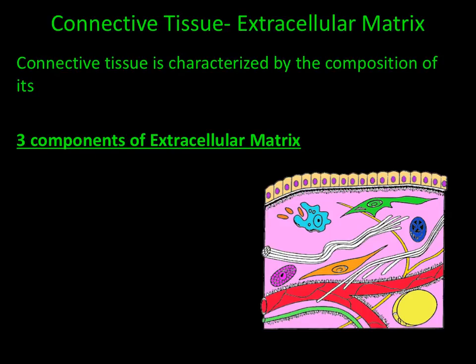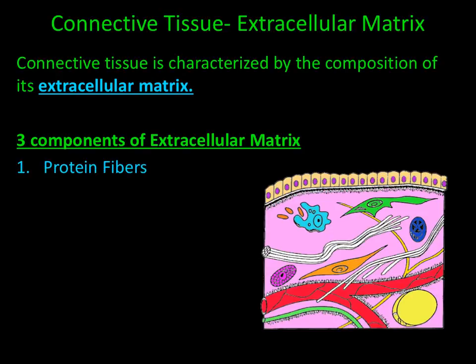The second part of connective tissue is called the extracellular matrix, and it's the composition of the extracellular matrix that distinguishes each type of connective tissue. There are three components of extracellular matrix: the protein fibers, an organic ground substance, and water or fluid.